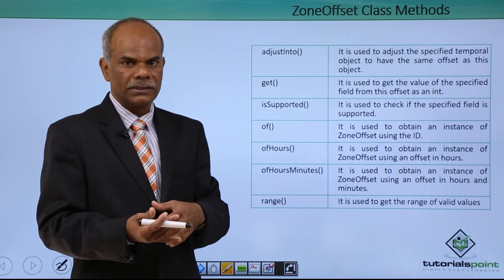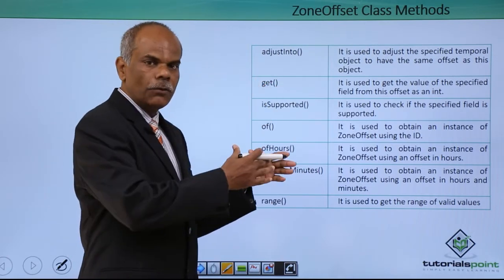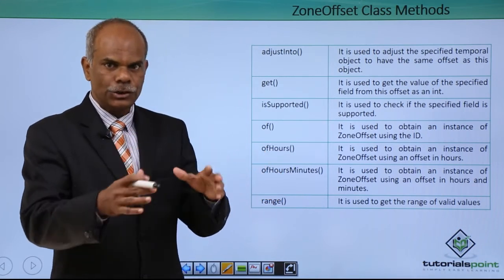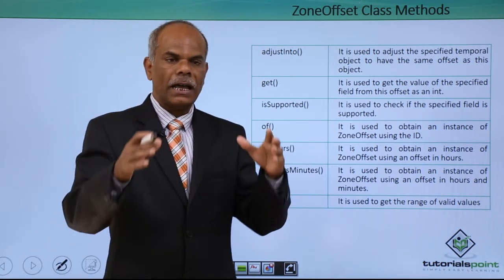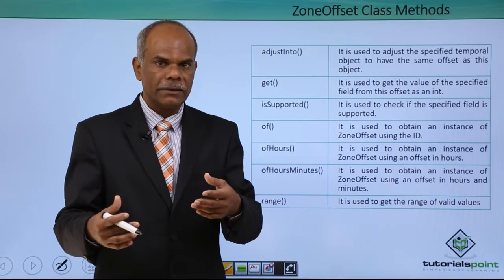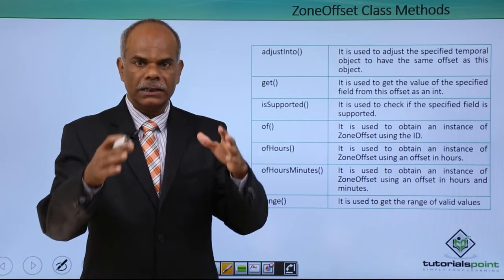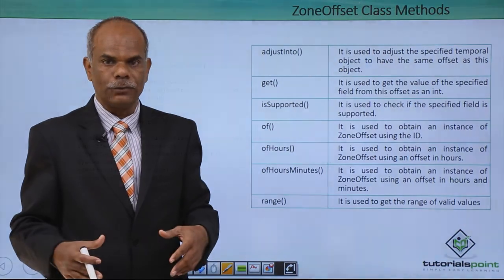ZoneID class and zone offset class. The functionality of both these classes we shall put into actual use in an example. I will show you an example, execute the example and explain the use of all these methods practically by running the example.